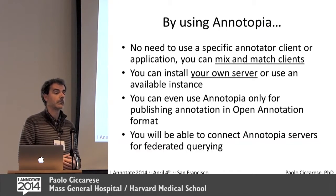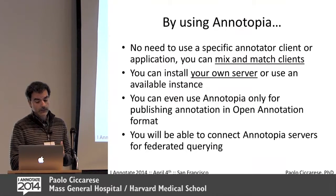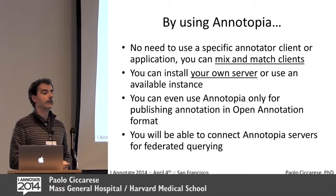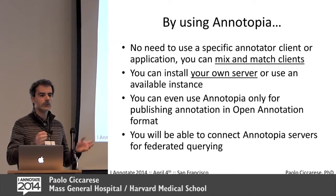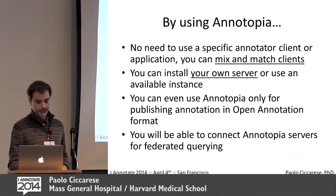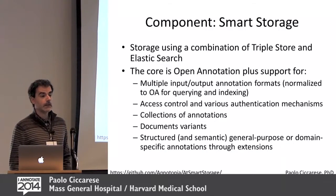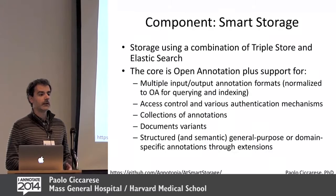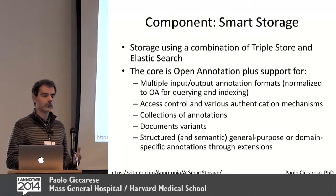You can install your own server — if you're a pharmaceutical company, you're going to do that. You can rely on a server already installed. You can use it just for publishing Open Annotation. If you have a good system, like Open Peer Library with their Meteor backend, but you want to publish Open Annotation and unload your server, you can push annotations to the node and that will be a publishing node. We want to support federations. There are several components already on GitHub — this is the storage component.